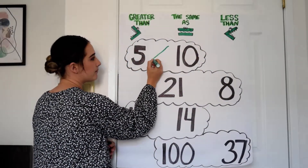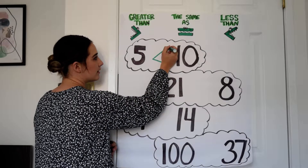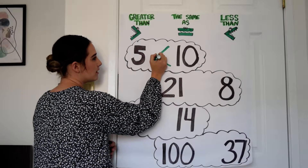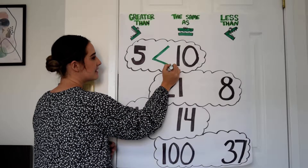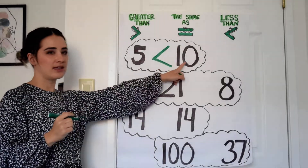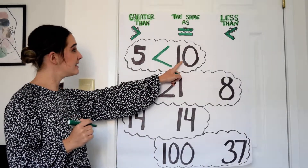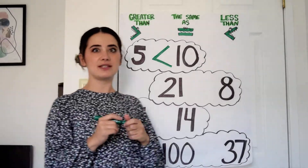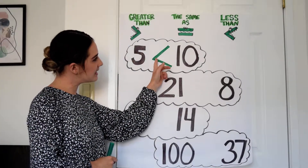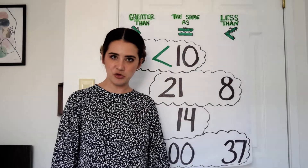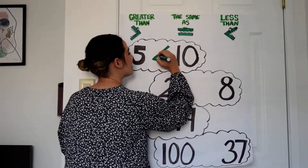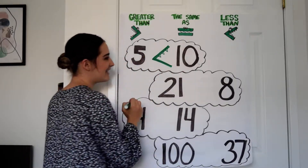He's hungry, remember? This symbol right here means less than, and his little alligator mouth is facing towards the ten because he's hungry — he wants the bigger number. So this says five is less than ten. Is that true? Yes, five is less than ten. Let me give him some alligator teeth.